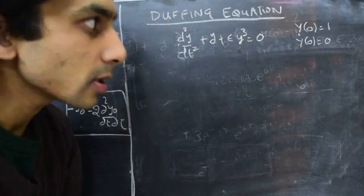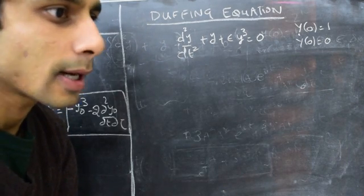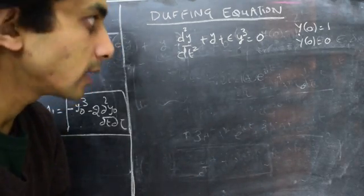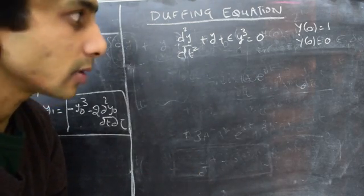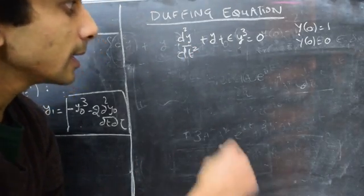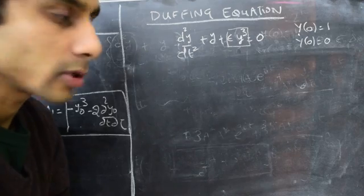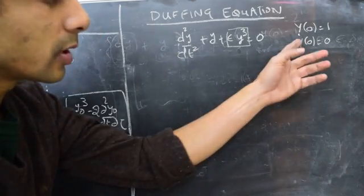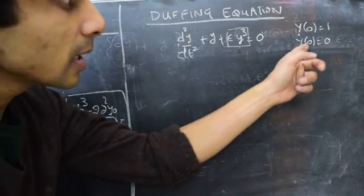Hi there. In the previous parts of the video we worked out the zeroth order and the first order differential equations that we get when looking for a multi-scale expansion of the Duffing equation. As a quick reminder, the Duffing equation is a second order nonlinear differential equation in terms of the non-dimensional dependent variable y, where t is the independent time variable. The nonlinear term is ε·y³, where ε is a small positive parameter. We solve this subject to initial conditions y(0)=1 and ẏ(0)=0.